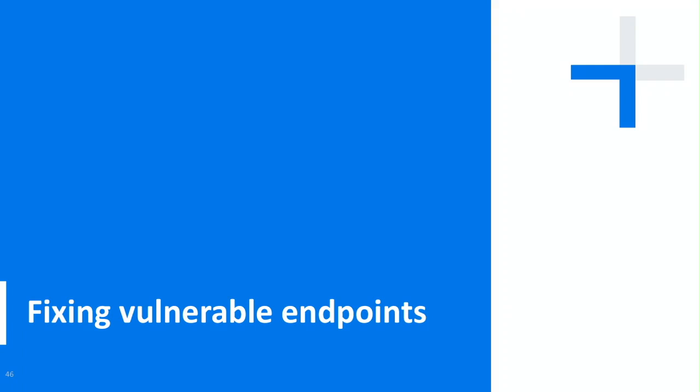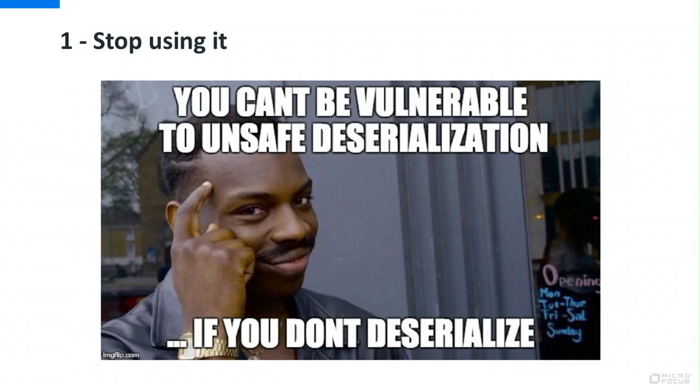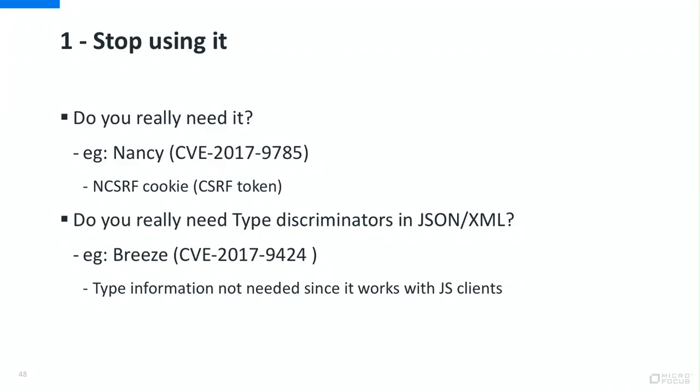One good example is the Nancy web application framework — similar to Sinatra in Ruby. They cared about security and implemented CSRF protection. But instead of putting a unique token into the CSRF cookie, they were serializing that token into binary format and putting that into the cookie, making the whole framework and all applications built on it vulnerable to remote code execution because of this CSRF protection implementation.